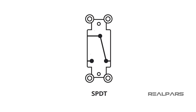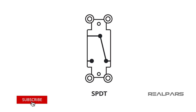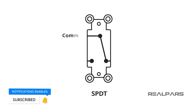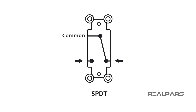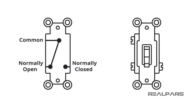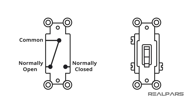An SPDT switch has three terminals. It will have one terminal in and two terminals out. Each terminal on an SPDT switch has a name. The input terminal is called common. The output terminals are called normally open and normally closed. Operating the toggle or lever will cause the common terminal to connect to the normally open or normally closed terminal depending on its position.